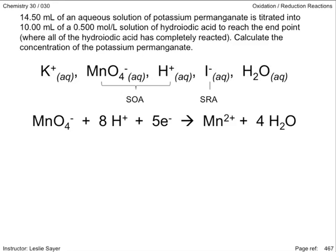We write out the reduction half reaction copied from the data booklet of the strongest oxidizing agent, then the oxidation half reaction for the strongest reducing agent read from your data book from right to left.